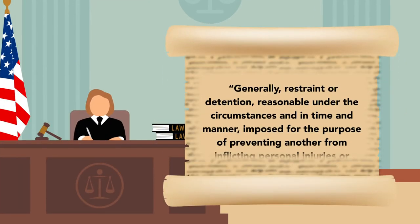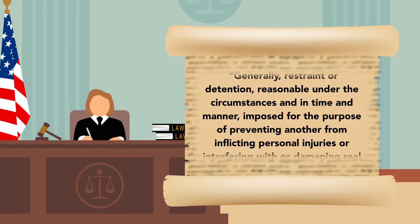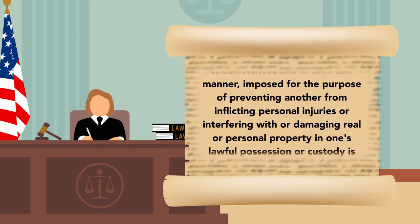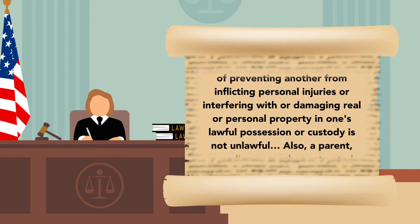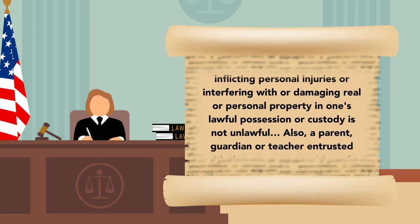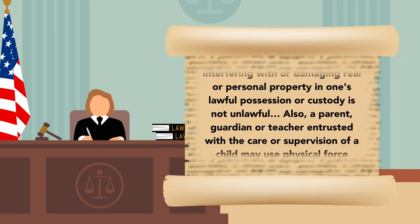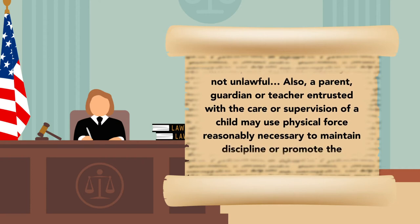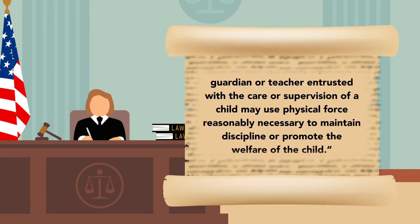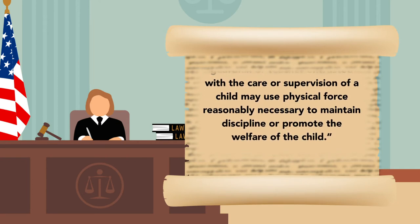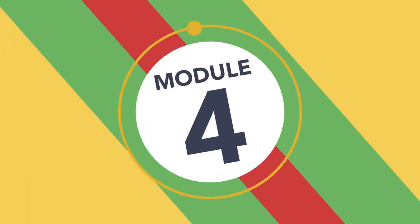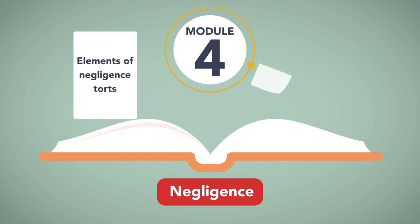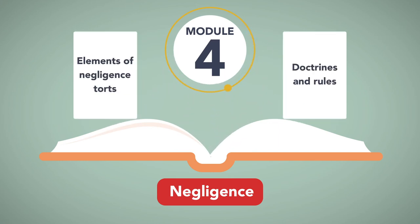The court stated that generally, restraint or detention, reasonable under the circumstances and in time and manner, imposed for the purpose of preventing another from inflicting personal injuries or interfering with or damaging real or personal property in one's lawful possession or custody, is not unlawful. Also, a parent, guardian, or teacher entrusted with the care or supervision of a child may use physical force reasonably necessary to maintain discipline or promote the welfare of the child. In our next module, we'll turn to negligence and discuss the elements of negligence torts and some of the doctrines and rules applied to negligence causes of action.